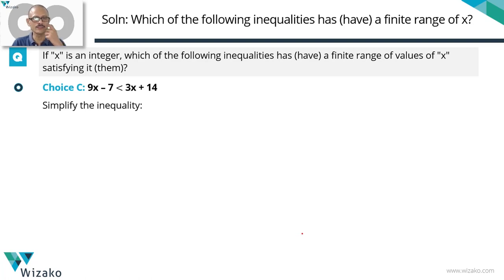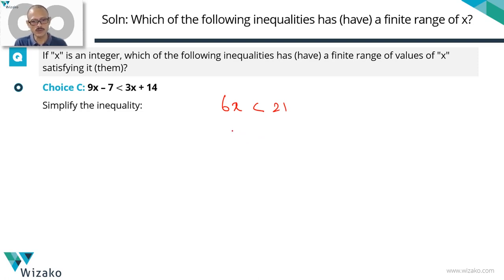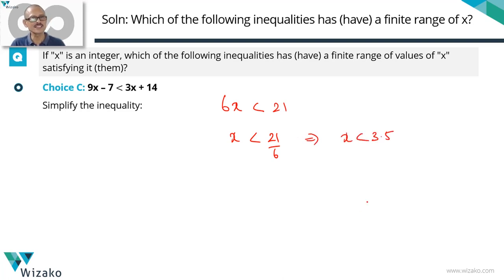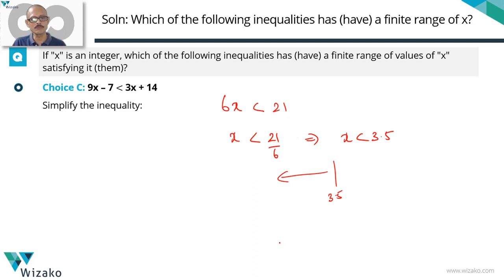Moving to option C, a simple linear inequality. Taking 3x to the left-hand side and −7 to the right gives 6x < 21, so x < 21/6 = 3.5. Integer values less than 3.5 can go all the way down to minus infinity. So once again we have an infinite range of values of x. Choice C is also not the answer.